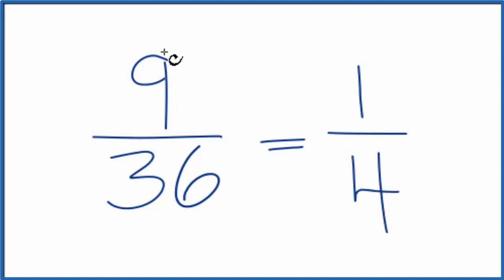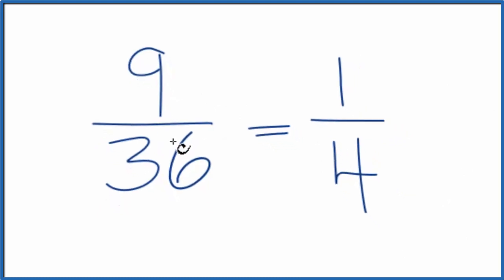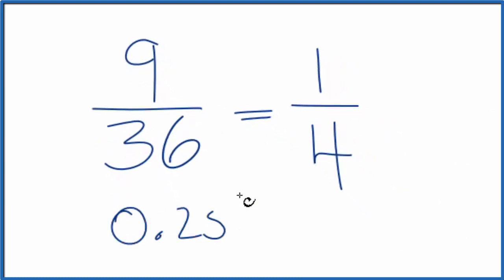So when we simplify 9/36, we get 1/4. We can't reduce this any further. These are equivalent. If you divided 9 by 36 on your calculator, you get 0.25. If you divided 1 by 4, you get 0.25.